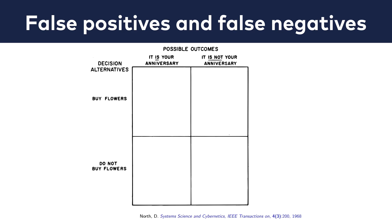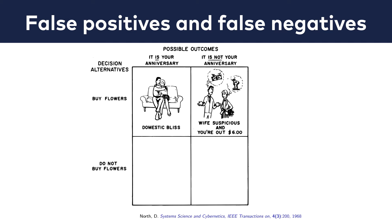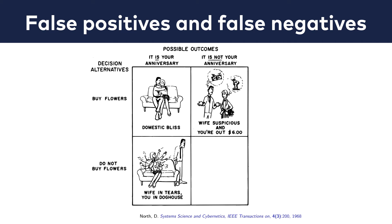Here are all the possible scenarios. It is your anniversary and you buy flowers — everyone's happy. Obviously, this is a true positive. It is not your anniversary but you buy flowers — that's a false positive. Your losses are minimal: your wife gets suspicious and you're shorter by $6. It is your anniversary but you do not buy flowers — that's the worst possible scenario: wife in tears, you in the doghouse. From a statistical standpoint, this is what we call a false negative. And eventually, it is not your anniversary and you do not buy flowers — nothing happens. This is a true negative.